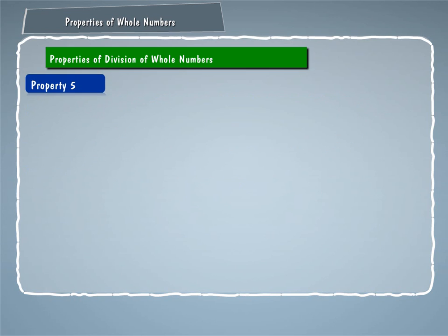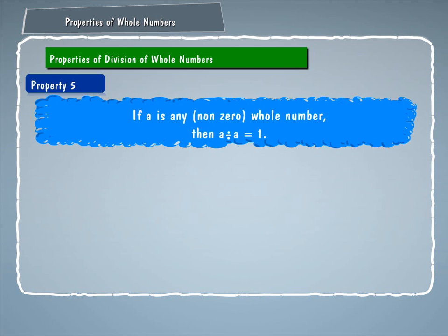Property 5. If A is any non-zero whole number, then A divided by A is equal to 1. For example, 25 divided by 25 gives 1.